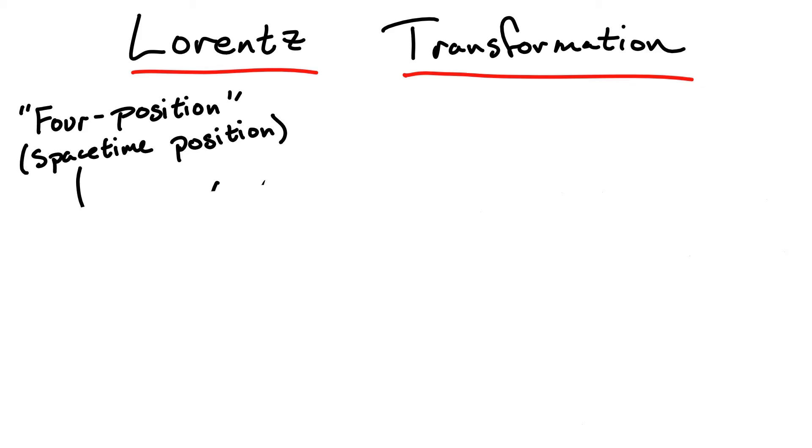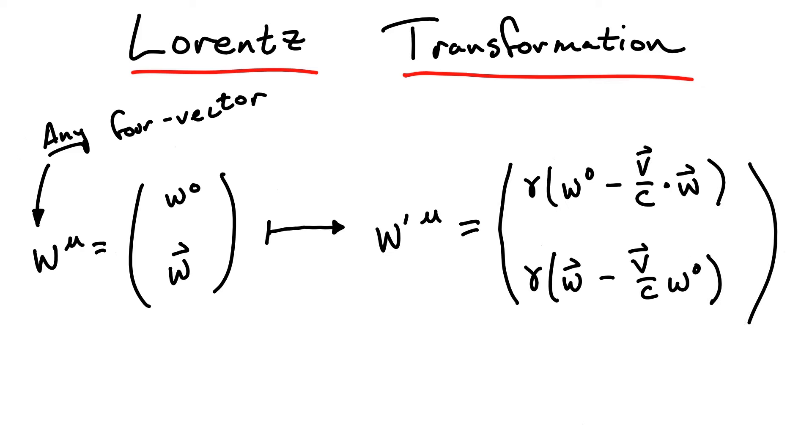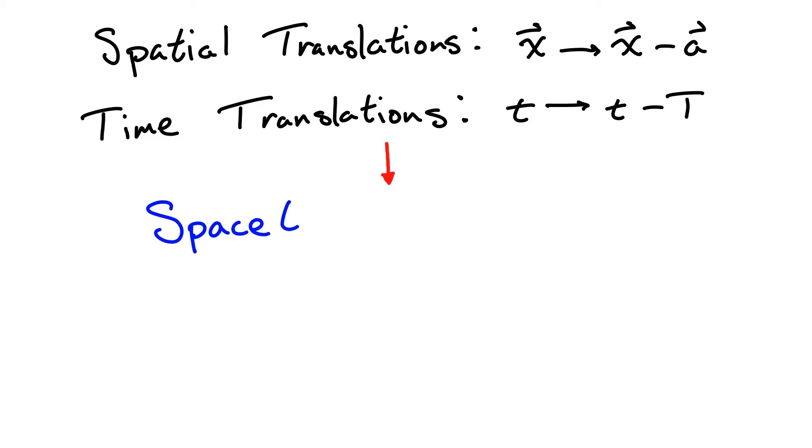However, these Lorentz transformations share many similarities with rotations, one being that they don't only act on position vectors, but in fact any 4 vectors in the spacetime. We'll come back to this point in just a second. Putting this together, we see that we no longer need to separate spatial and time translations into two different things. They're simply combined spacetime translations, which act on our full spacetime position 4 vector.